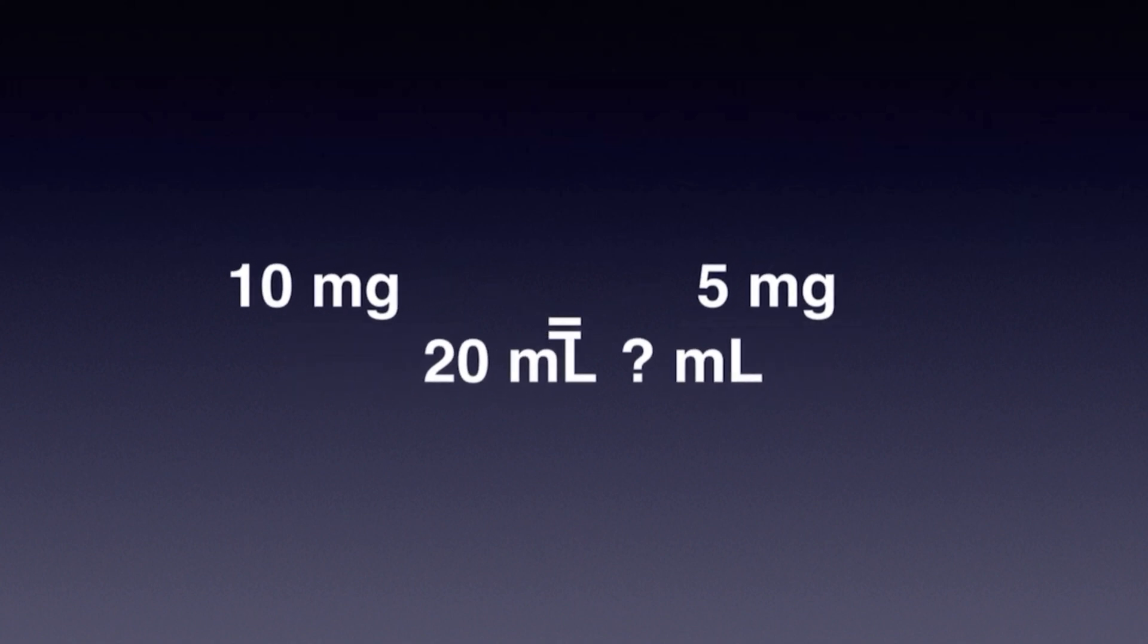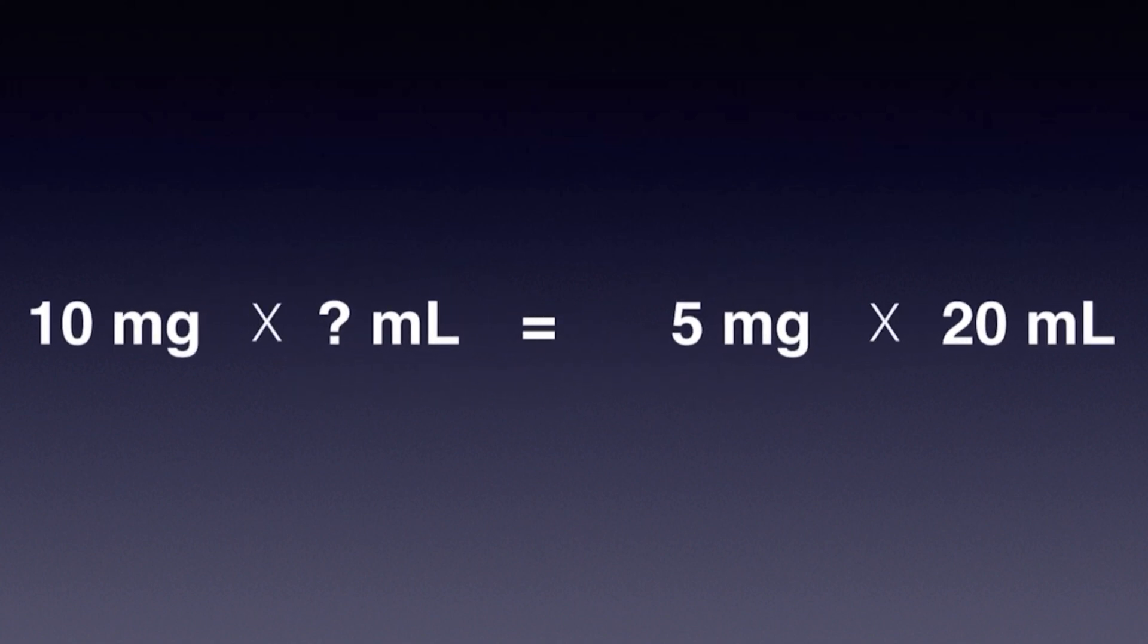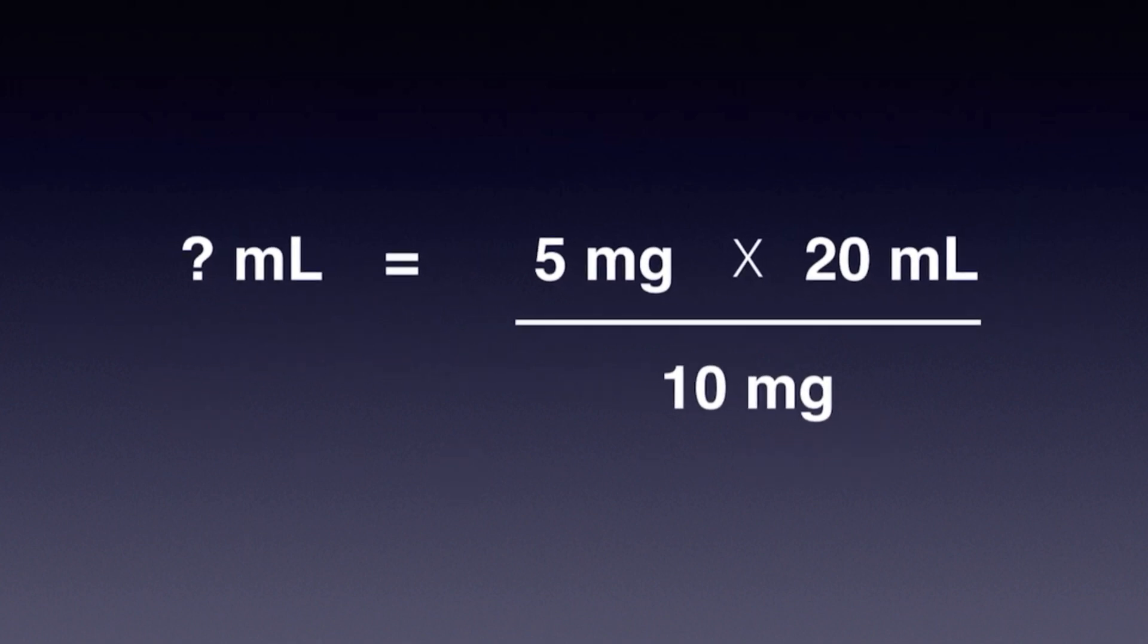So if I rearrange that, I have 10 multiplied by the question mark and 5 multiplied by 20. Again, I need to rearrange so I can get my milliliters all by themselves. So I'm going to take my milligrams and move it over here. So to do that, I have 5 milligrams multiplied by 20 milliliters divided by 10 milligrams.